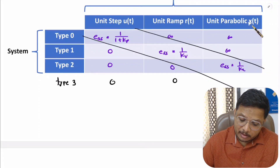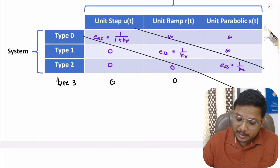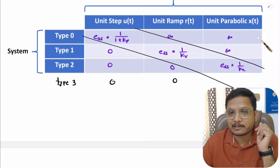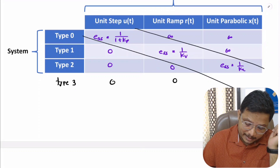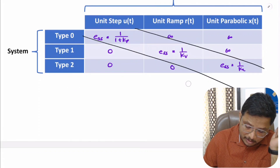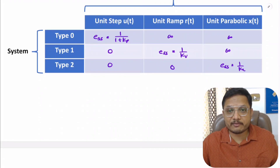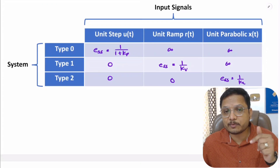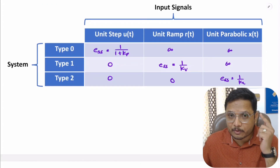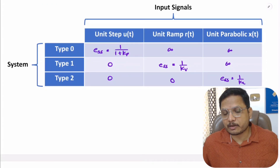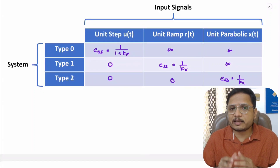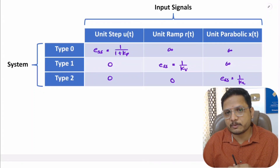For higher order signals there will be infinity, and for type 3 systems the parabolic error would be 0. This is all about this video. I hope you now have a fair enough idea about steady state error and how it changes with respect to input signal and type of system. If any confusion remains, place it in the comment section — I will be happy to help you. Thank you so much for watching.